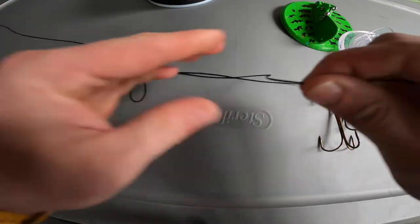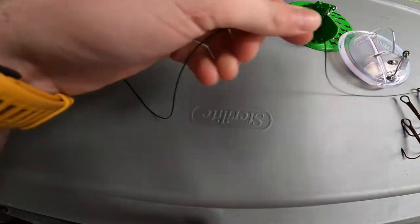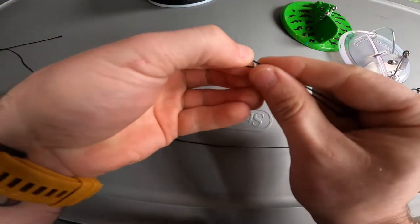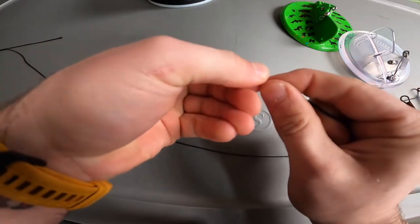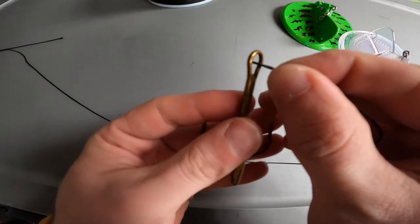Then you want to come up about 18 inches and create your loop once again. Take that loop through the eye of the hook.